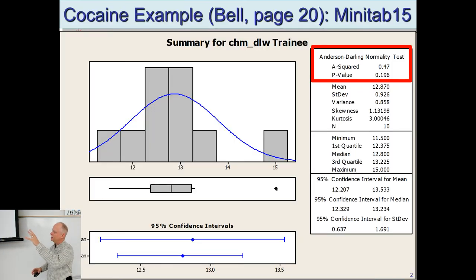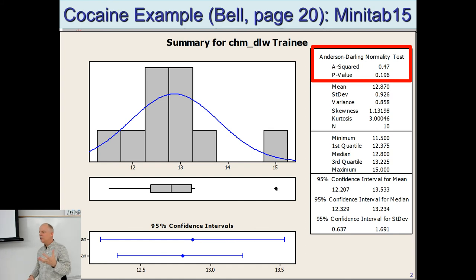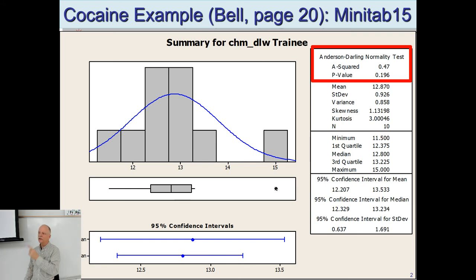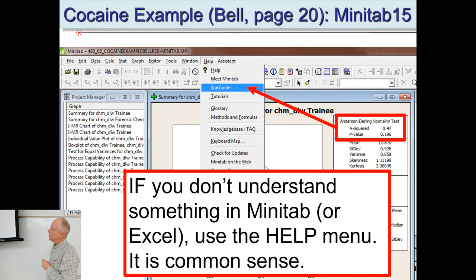This is our Anderson-Darling normality test. This was the training data we showed before, and it looked like there was an outlier at 15. We did Dixon's Q test and Grubbs' test and were able to determine statistically that it was an outlier. In Minitab, this is called the graphical summary — find it in the menu and you'll get all kinds of values we'll talk about today.